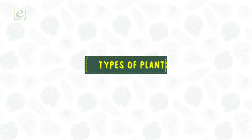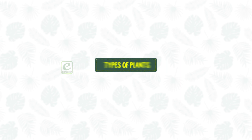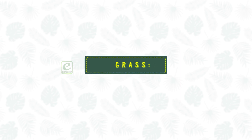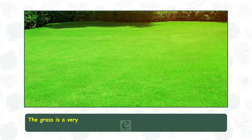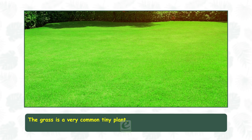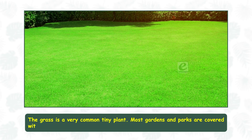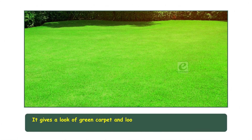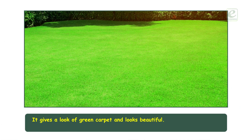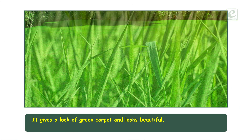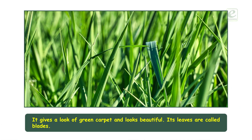Types of plants. Grass. The grass is a very common tiny plant. Most gardens and parks are covered with it. It gives the look of a green carpet and looks beautiful. Its leaves are called blades.